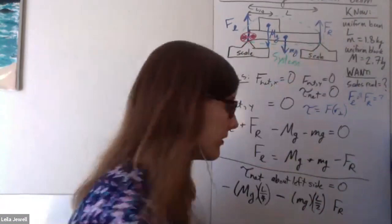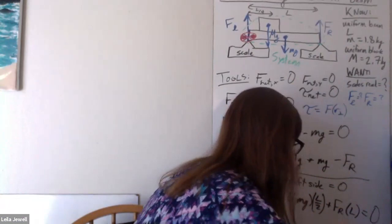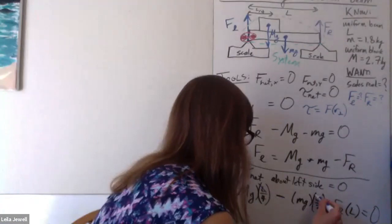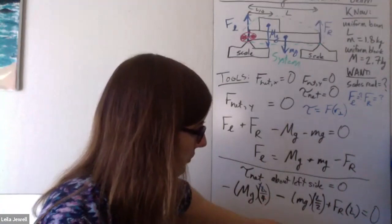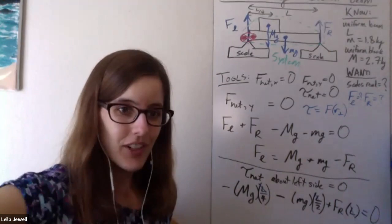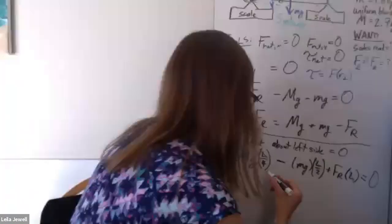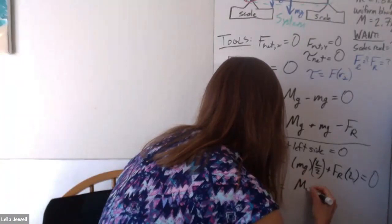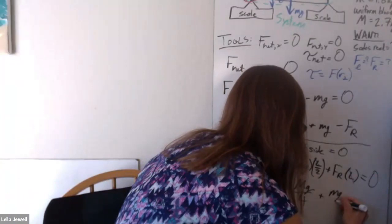And what you may notice here is that all of the terms here have an L in it. So we're able to divide out the L. So we don't need to worry about that. So that's cool. That canceled out. If I add my two negative ones to the other side, then we actually have an equation right away for F sub r. So let's see. So F sub r is equal to big Mg divided by four plus little Mg divided by two. Cool.